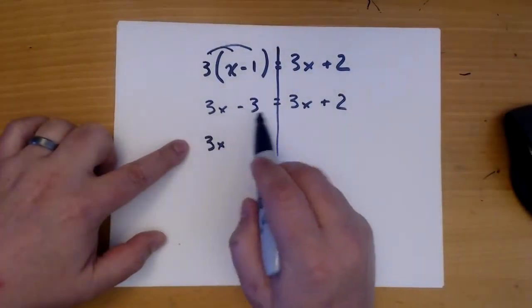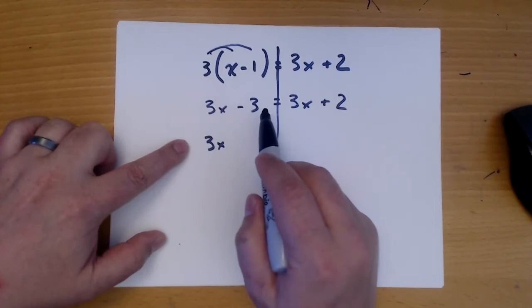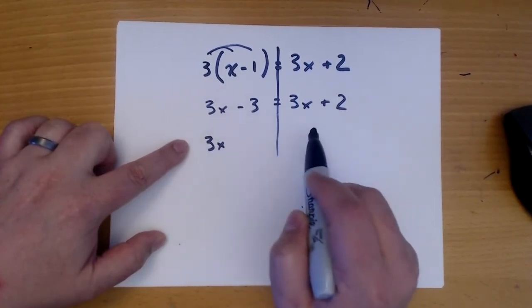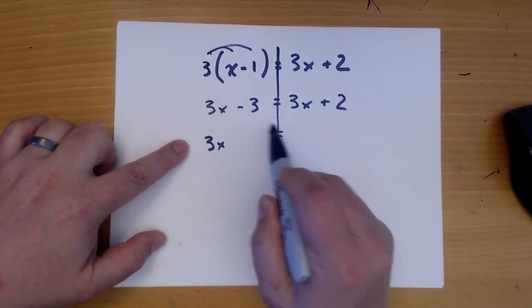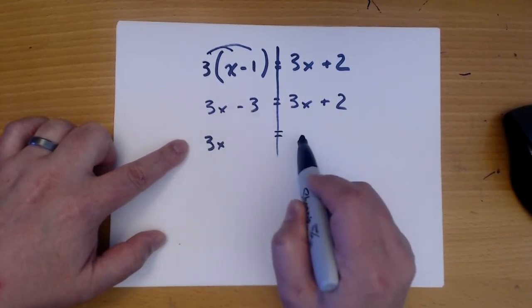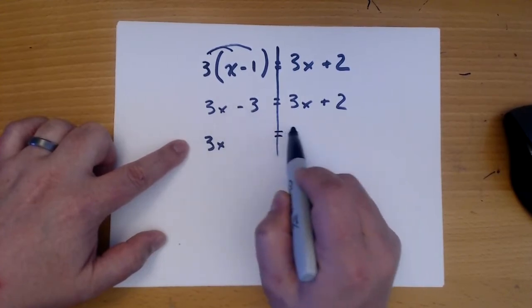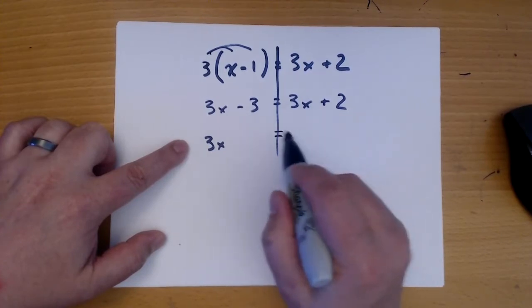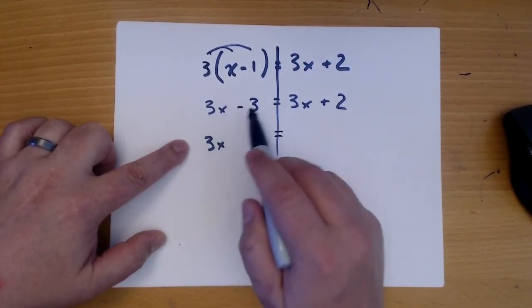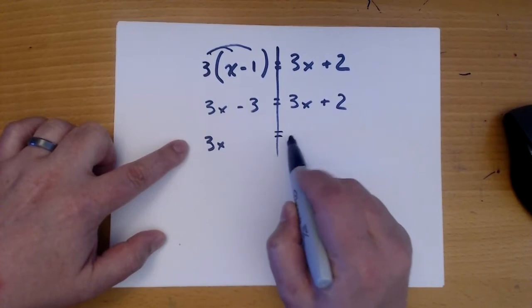This is not in the right place. It's a constant and it belongs over here. So we move it from one side to the other, and when it crosses the line, it changes sign. So this is minus three. It comes over here as plus three.